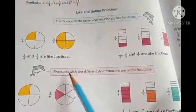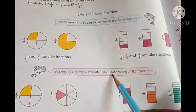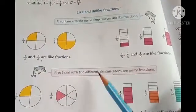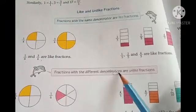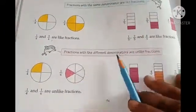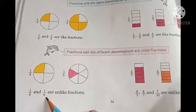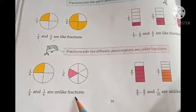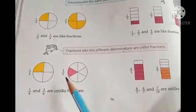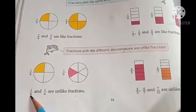The next definition is unlike fractions. Fractions with different denominators are unlike fractions. For example, 1 by 4 and 1 by 6 are unlike fractions — you have to check their denominators; if denominators are different, then they are unlike fractions.